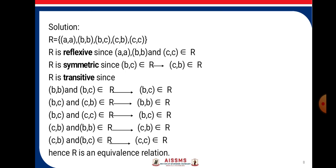R is transitive: since (B,B) and (B,C) are in R, we have (B,C) in R; since (B,C) and (C,C) are in R, (B,C) belongs to R; since (C,B) and (B,B) are in R, (C,B) belongs to R; since (C,B) and (B,C) are in R, (C,C) belongs to R. As all three properties are satisfied — the relation is reflexive, symmetric, and transitive — hence R is an equivalence relation.